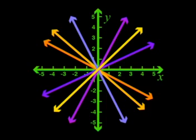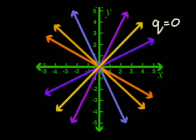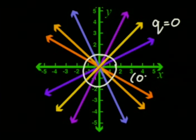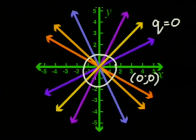I see something that's the same. They all cut the y-axis at zero. That means they all have a q value of zero. That's right. When q equals zero, the graph cuts the y-axis at zero, zero, which is the origin.